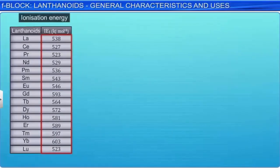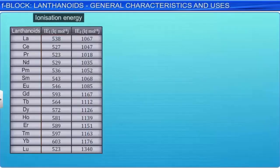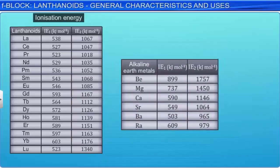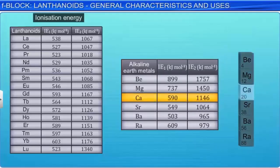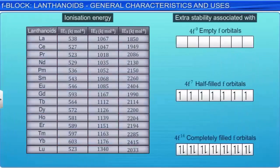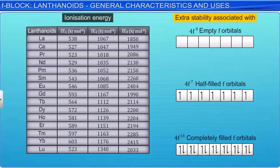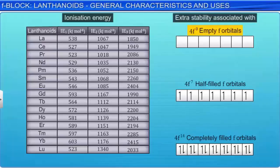The second and third ionization energies are comparable with the values of the ionization energies of the alkaline earth metals, particularly calcium. A detailed study of the third ionization energy shows the extra stability associated with empty, half-filled and completely filled orbitals of the F-level. This is reflected by the abnormally low value of the third ionization enthalpies of lanthanum, gadolinium, and lutetium.